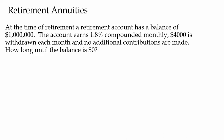In this video we're going to talk about a retirement annuity. The idea here is you've saved a bunch of money for retirement and now it's time to start using that money and we want to see how long that money will last. At the time of retirement, a retirement account has a balance of a million dollars. The account earns 1.8% compounded monthly. $4,000 is withdrawn each month and no additional contributions are made. How long until the balance is zero? How long is this money going to last?